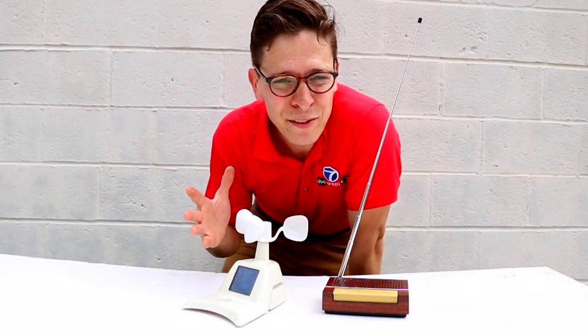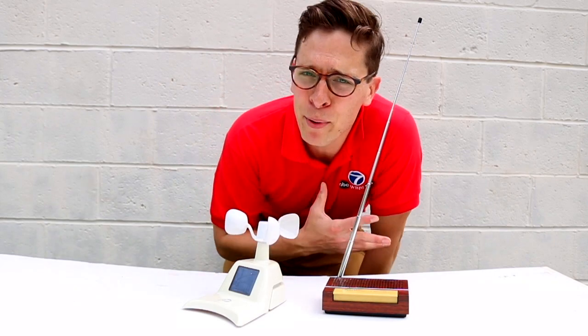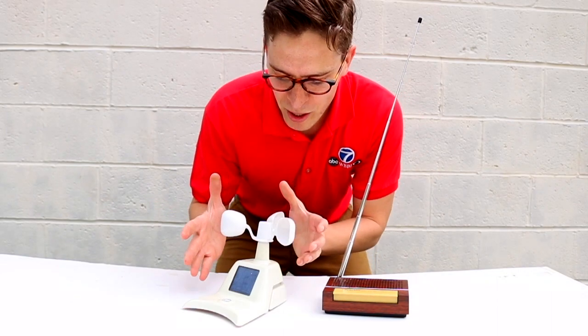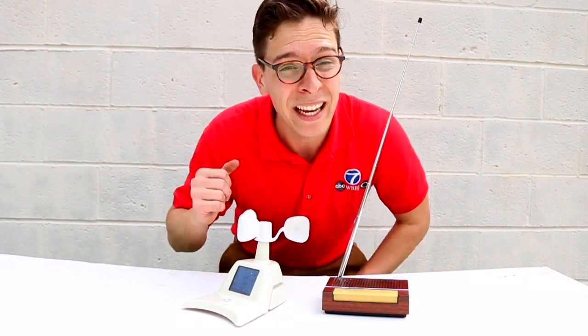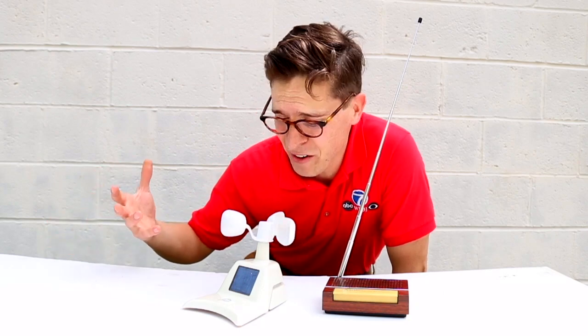Now, I use a lot of different weather instruments to see what the weather is doing. Some help me make predictions like the barometer, which you saw measures air pressure, but this one is called the anemometer, and it measures how fast the wind is blowing, and it can also tell me how strong the gusts are, which is when you have a short burst of very strong winds.